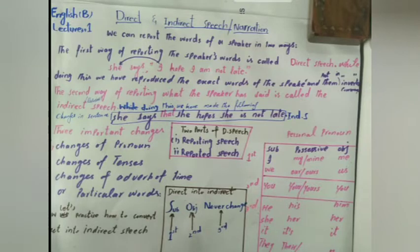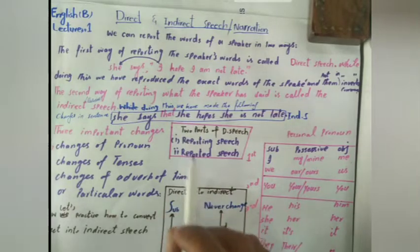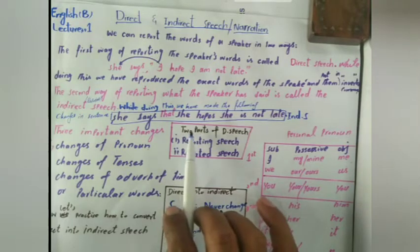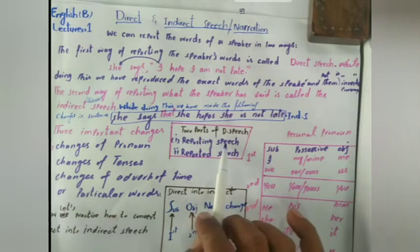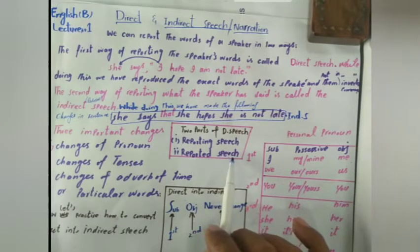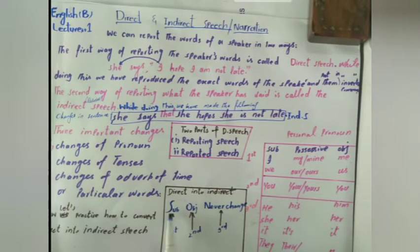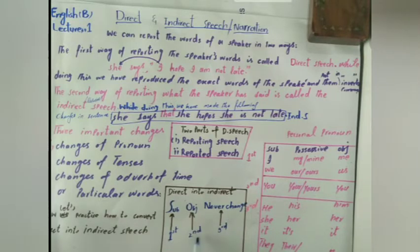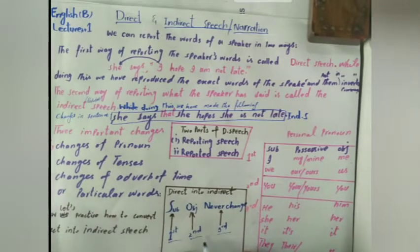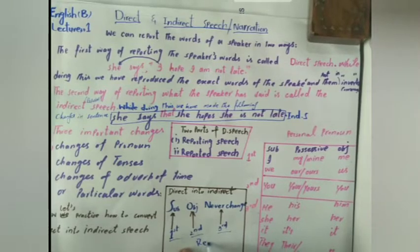Direct speech has two parts: reporting speech and reported speech. When we learn how to change the pronouns, we prepare the personal pronouns table and then use a formula which is S-O-N: Subject, Object, and Never change. This refers to first person, second person, and third person, and we check whether each pronoun appears in the reporting speech or the reported speech.